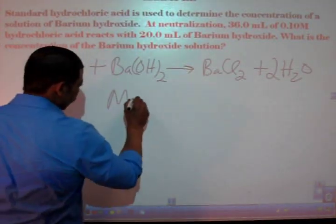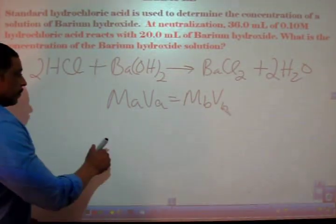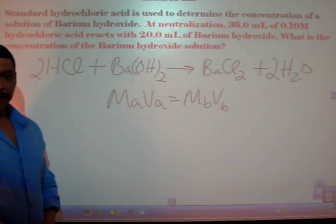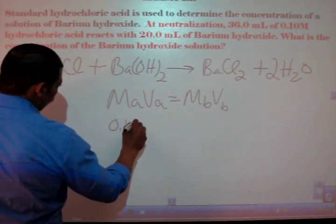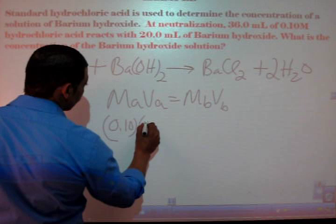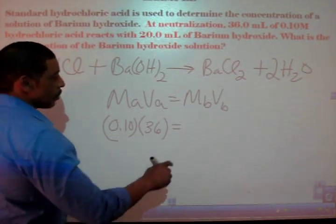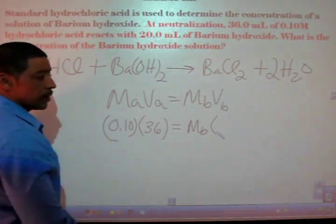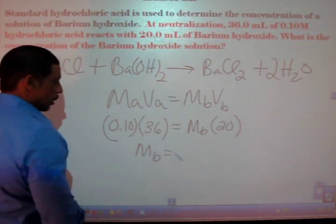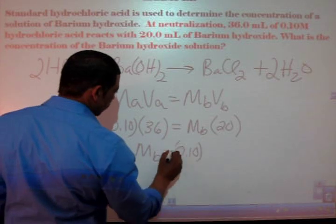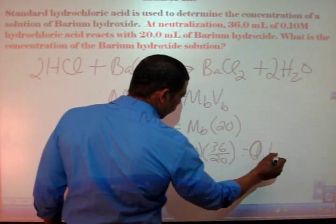Now we write our titration formula and input the given information. We are given a molarity of 0.10 for my acid and a volume of 36 milliliters for my acid. The molarity of the base is unknown, but the volume of the base is 20 milliliters. Solving for Mb, Mb is equal to 0.10 times 36 over 20, or 0.18 molar.